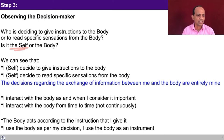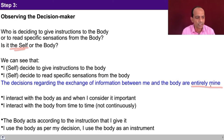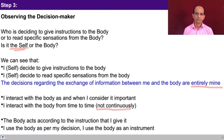You can see that it is the self — it is I — that decides to give instruction to the body, and it is the self that decides to read specific sensations from the body. The decisions regarding the exchange of information between me and the body are entirely mine. The body is only working as an instrument for me; the decision making is taking place in me by myself. I interact with the body as and when I consider it important — from time to time and not continuously. Giving instruction to the body is not continuous; reading sensation from the body is also not continuous. You are making a decision as and when required, but not continuously.